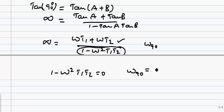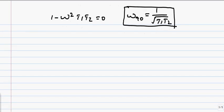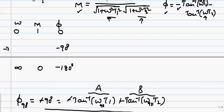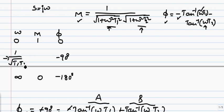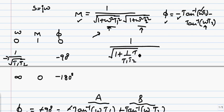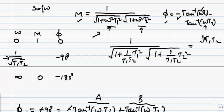Solving that equation, ω₉₀ equals 1 over the square root of T₁·T₂. We take the positive root since ω ranges from 0 to infinity. Substituting this ω₉₀ back into the magnitude formula, the magnitude at ω₉₀ works out to be the square root of (T₁·T₂) over (T₁ + T₂).